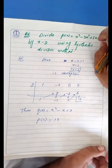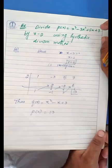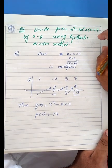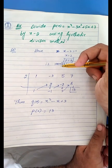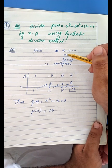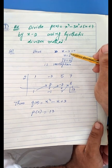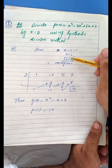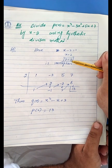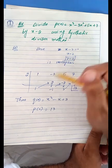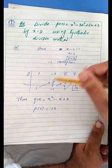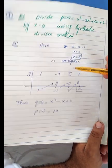For example: divide p(x) = x³ - 3x² + 5x + 7 by x - 2 using the synthetic division method. Set x minus 2 equal to zero, so x = 2, meaning a = 2. Write the coefficients: 1, -3, 5, 7 in the first row. Then apply the synthetic division steps to get the quotient coefficients and the remainder.